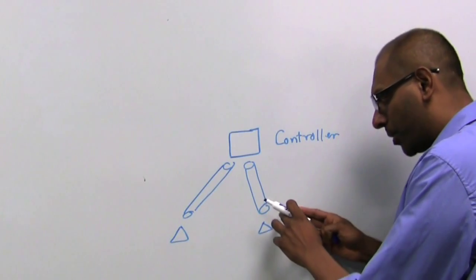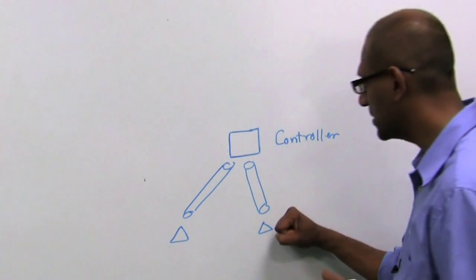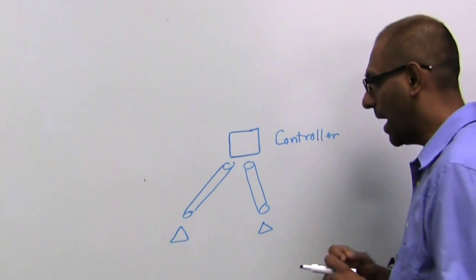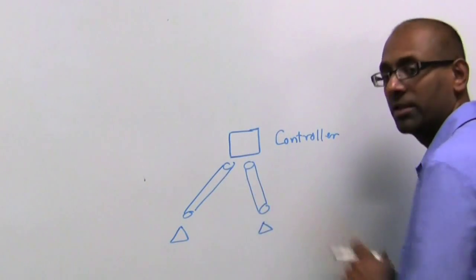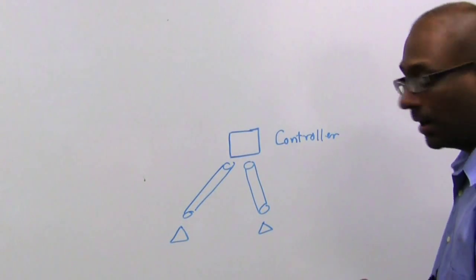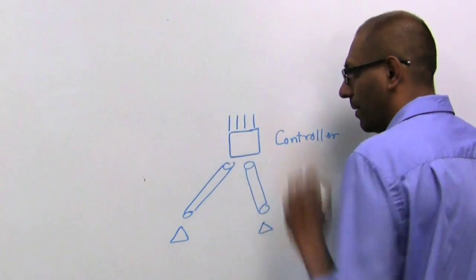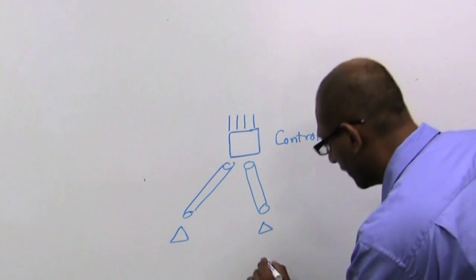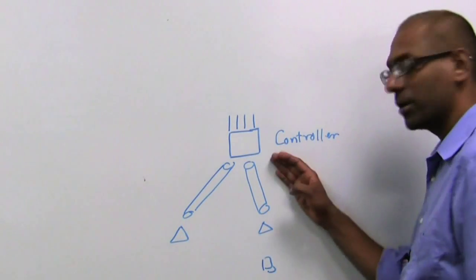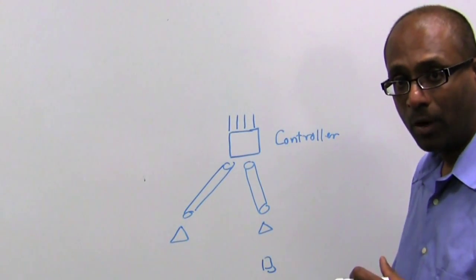Now, access points establish layer 2 or layer 3 tunnels between themselves and the controller, and the data packets from clients are transmitted back and forth within this tunnel. The controller is the central point to which all the wireless packets come in. And when the packets come into the controller, they can be put on multiple VLANs, depending upon policy mapping.